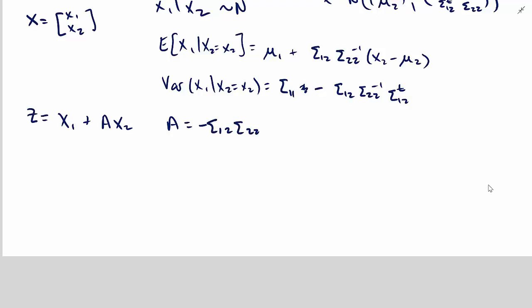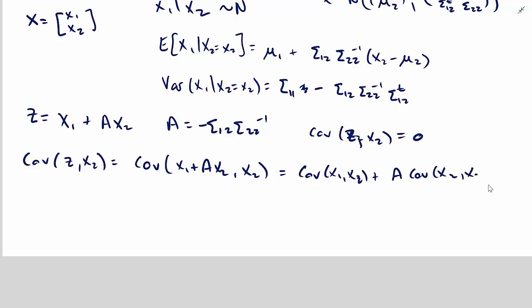And then what I would contend is that the covariance between x2 and z, let's say z and x2, is equal to zero. And let's work that out real quick. So the covariance of z and x2 is nothing other than the covariance of x1 plus ax2 and x2, which is equal to the covariance of x1 and x2 plus a covariance of x2 and x2.